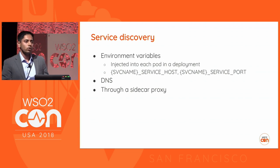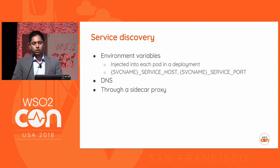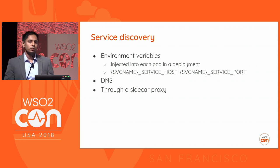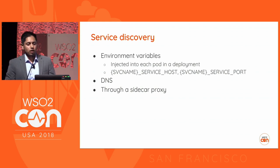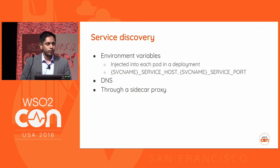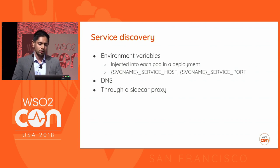Service discovery is again very important when you have a large microservice cluster, being able to address different services in a very effortless manner. There are multiple ways Kubernetes allows you to do service discovery. When you create certain pods, Kubernetes will automatically inject environment variables so you can look up service name, host, and port, and then connect to that service. Kubernetes also allows you to do DNS-based discovery — that's really the recommended way. When you have service mesh technologies, the service mesh itself will inject into the pod as a sidecar, and from your application you make a local call and discover services through the proxy sidecar.